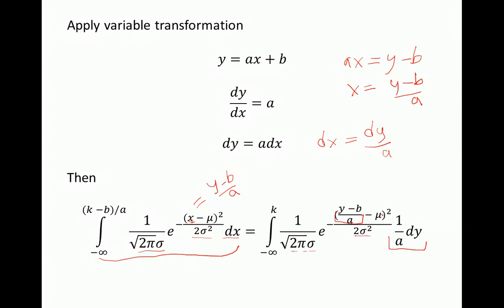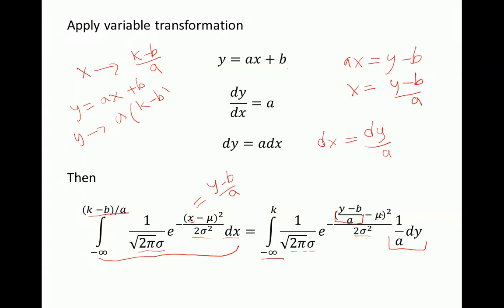We also have to look at the limits of integration. The lower limit is negative infinity. Suppose a and B are positive constants — if X goes to negative infinity, Y goes to a times negative infinity plus B, which is still negative infinity, so the lower limit stays the same. As X goes to K minus B over a, the upper limit, Y equals aX plus B goes to a times (K minus B over a) plus B, which equals K. So K is the upper limit of integration, and we have now transformed the integral in terms of the variable Y.